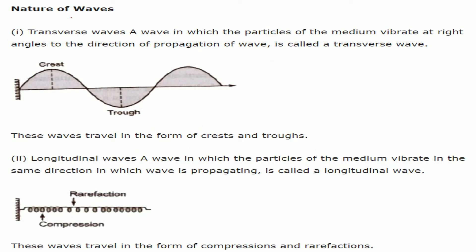Regarding the nature of waves, we have transverse waves and longitudinal waves. A transverse wave is one in which the particles vibrate at right angles to the direction of propagation. The particle moves laterally with respect to the direction of propagation. These are called transverse waves, and they travel in the form of crests and troughs — the upper part is the crest and the lower ditch part is the trough.